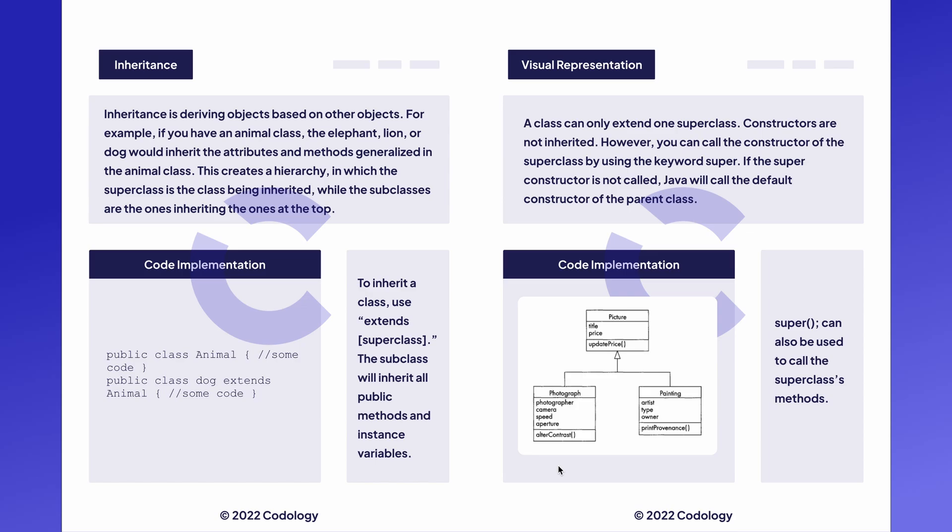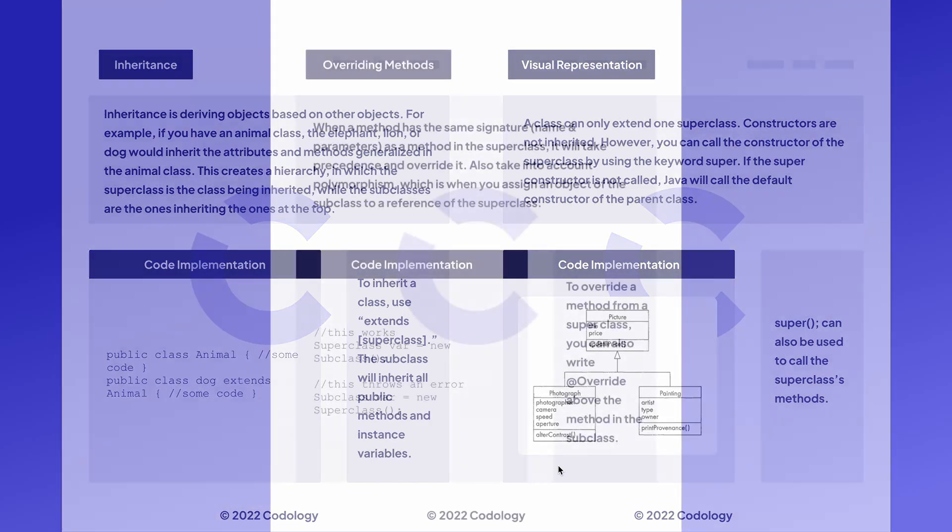Here is a UML diagram of what an inheritance hierarchy would look like. In this case, picture would be our superclass and photograph and painting would be our subclasses. Picture has title and price as instance variables, and photograph and painting also have title and price as their instance variables.